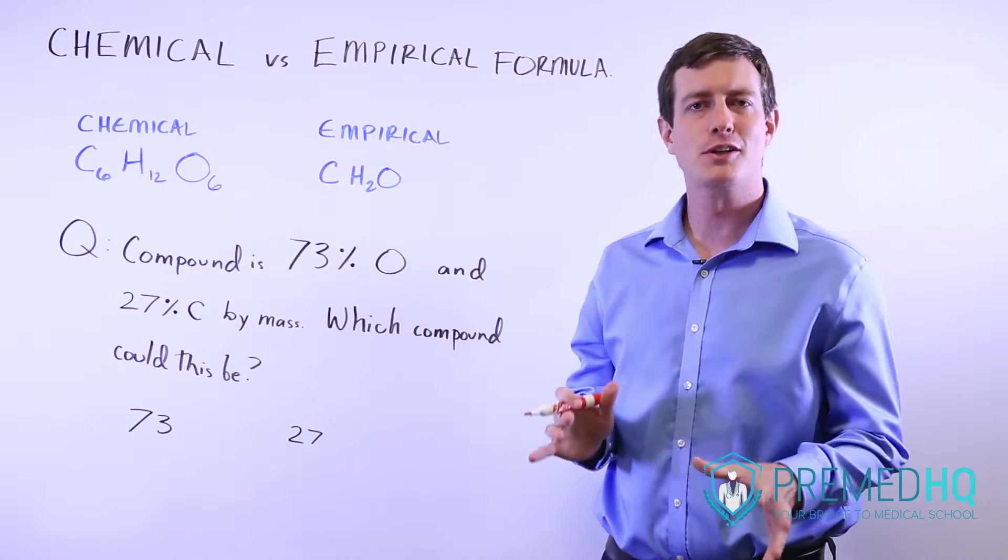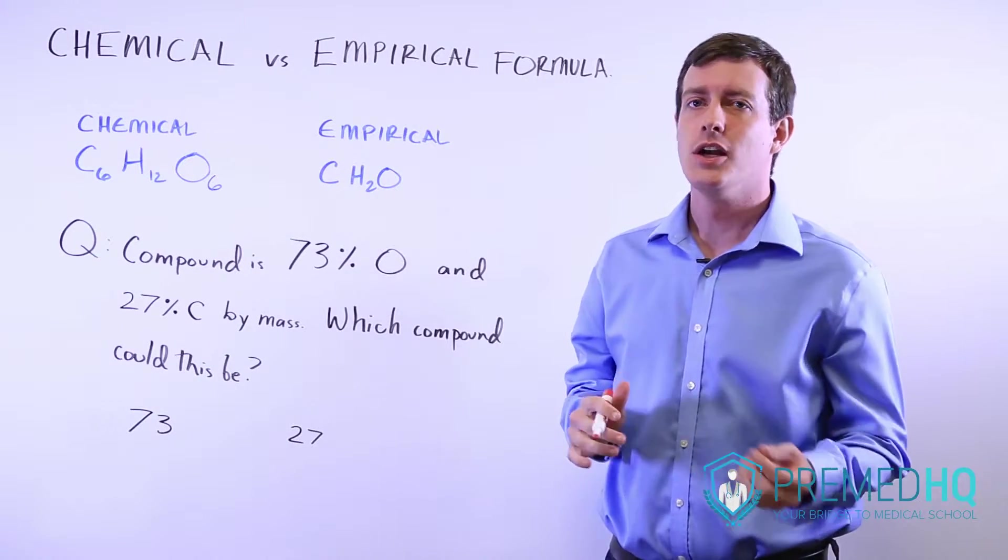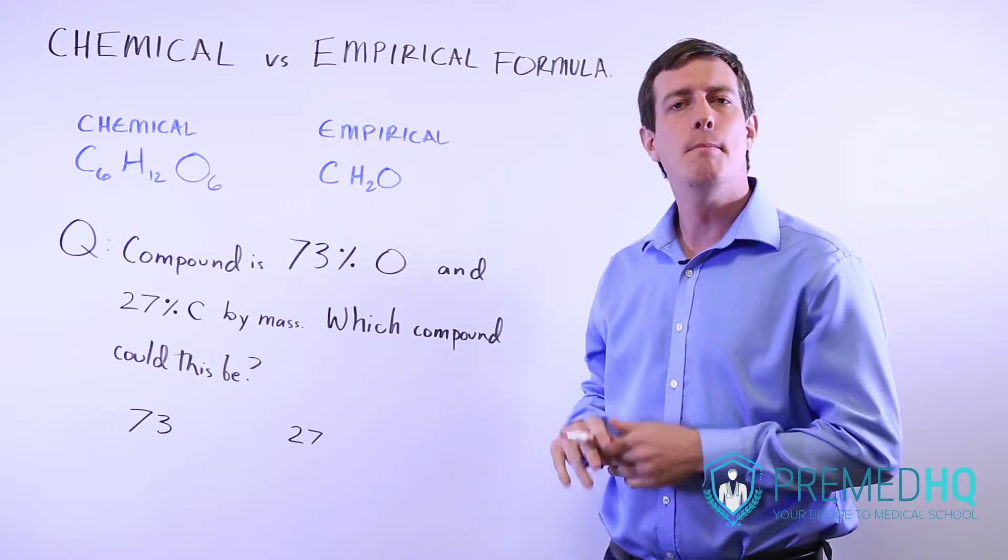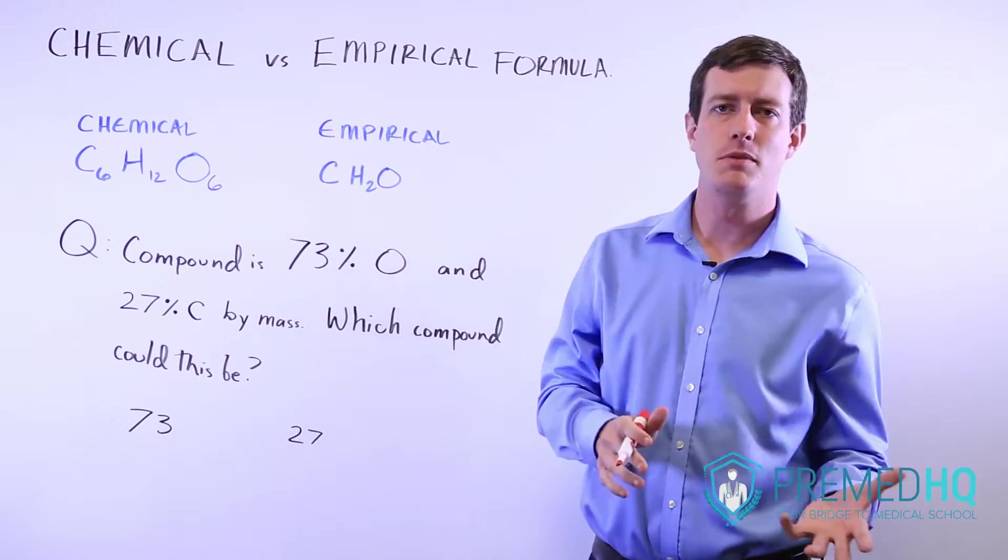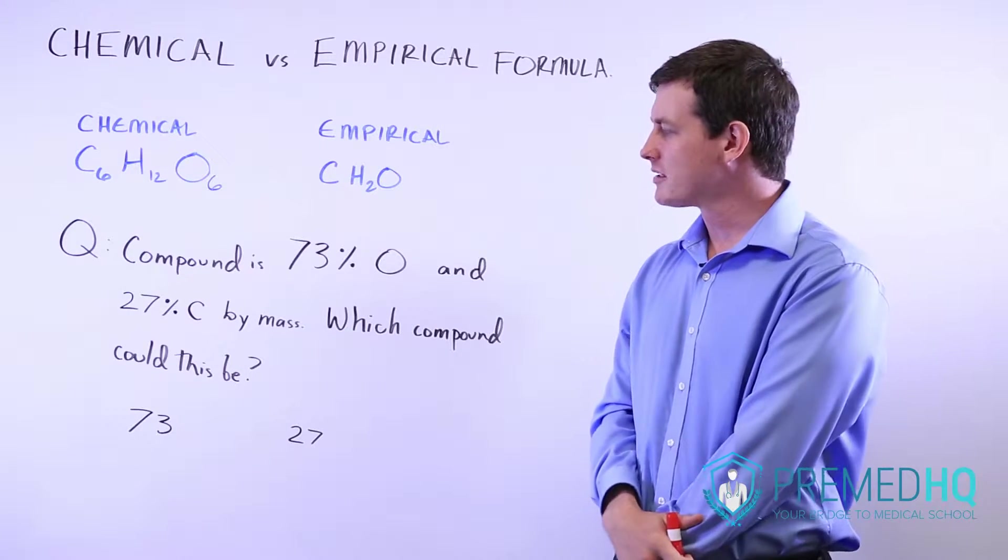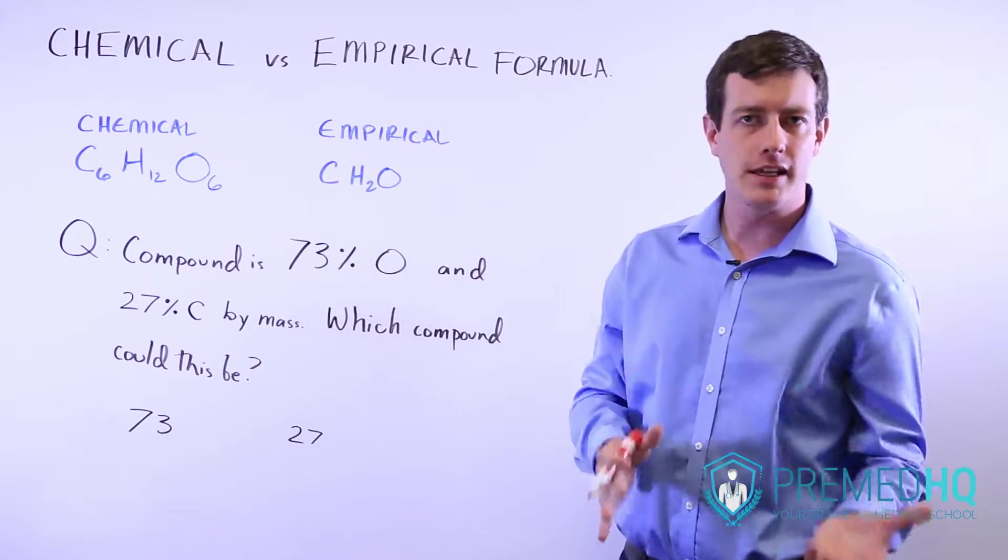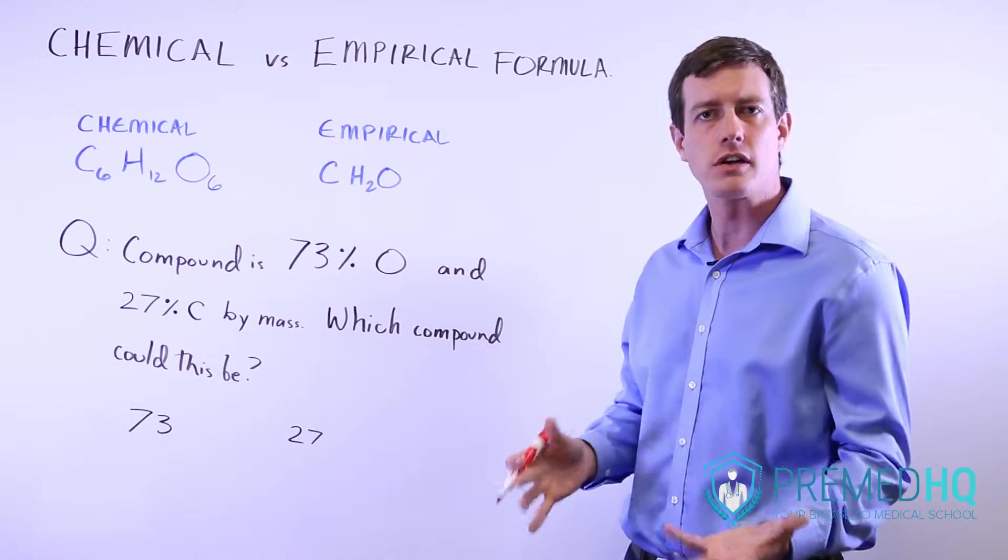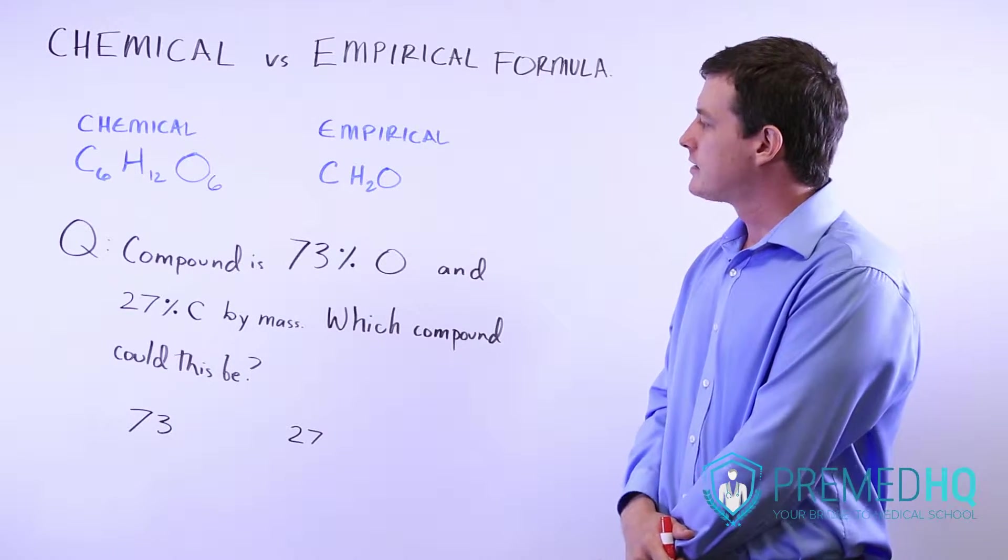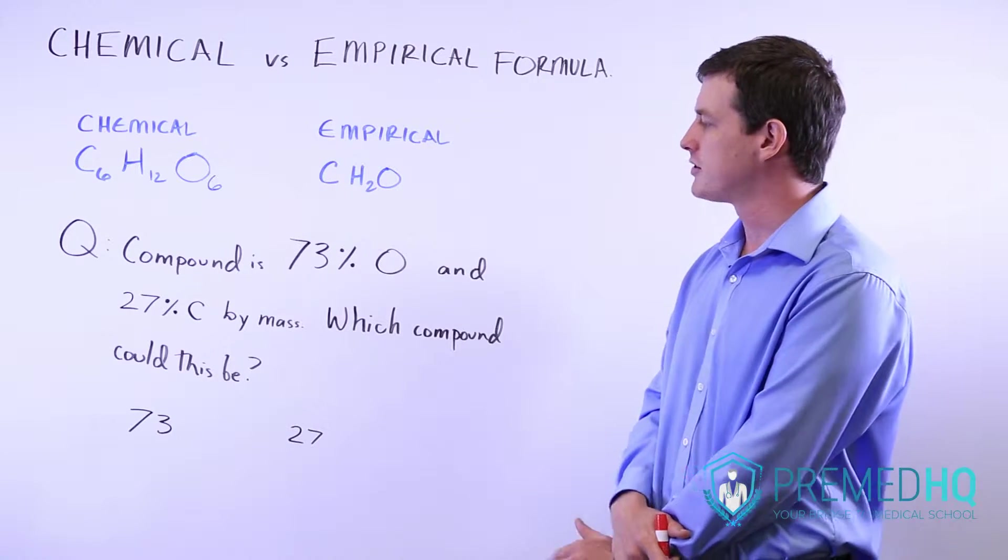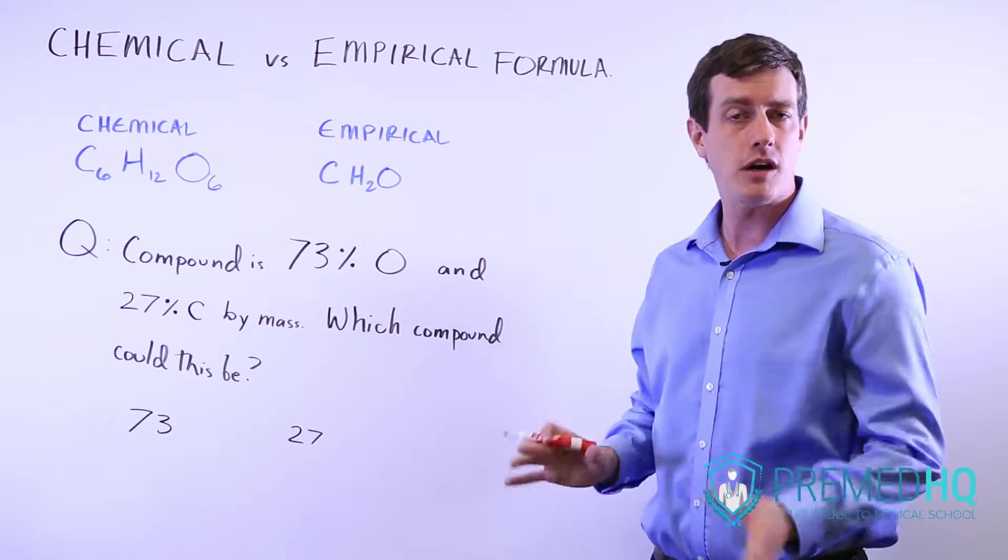Working from an empirical formula can be very helpful when you encounter questions that involve percentages by mass but they don't tell you the molecular weight or atomic weight of a compound. Here's a sample question: a compound is 73% oxygen and 27% carbon by mass. Which compound could this be?